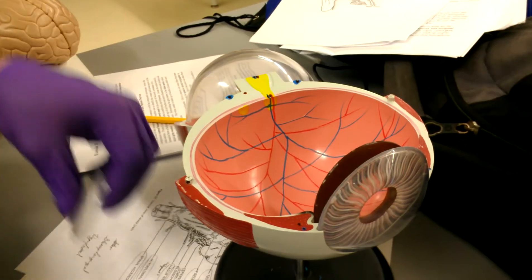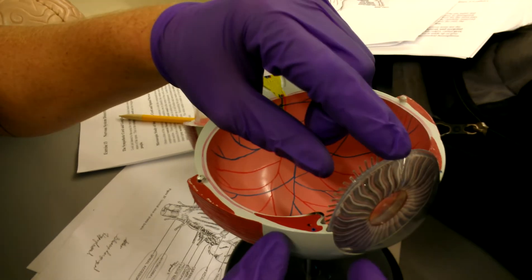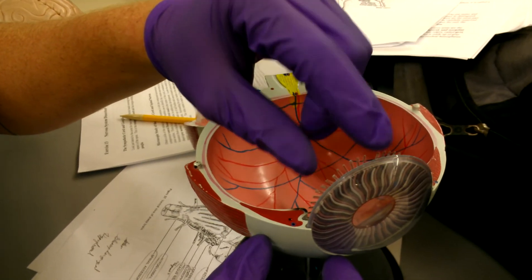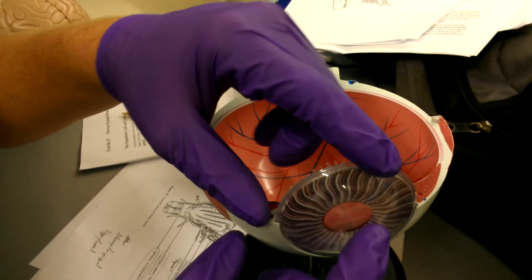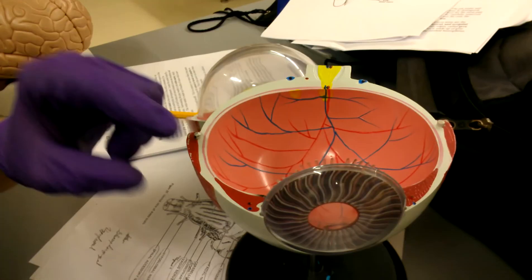And the space between the iris and the lens in the back is the posterior chamber. Between the iris and the cornea is the anterior chamber.